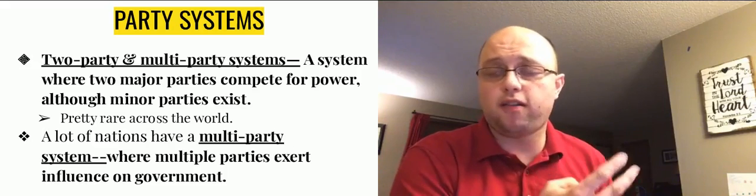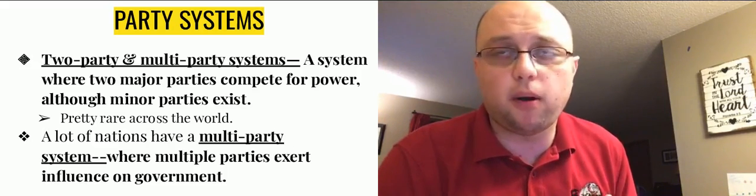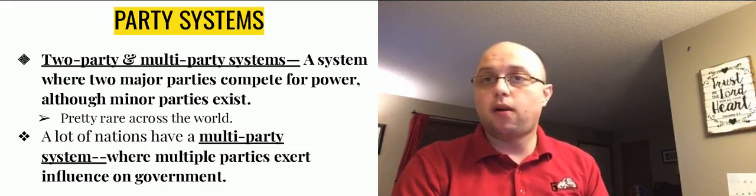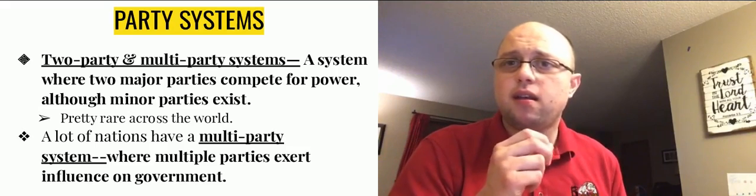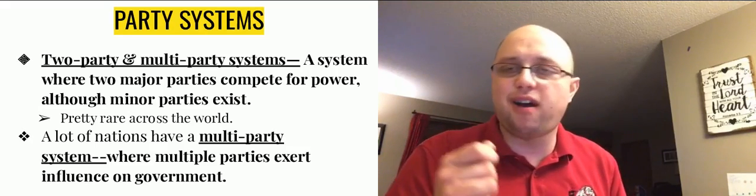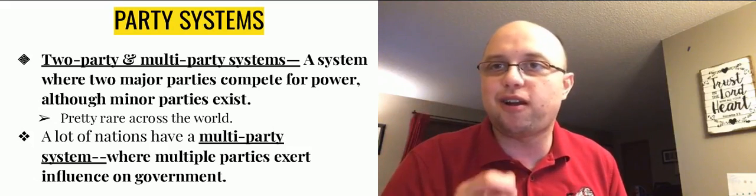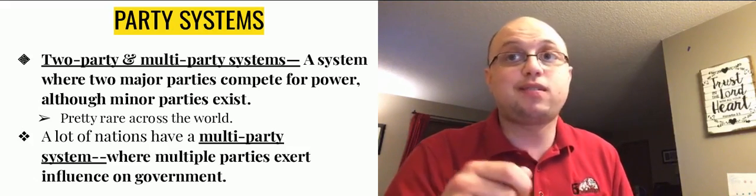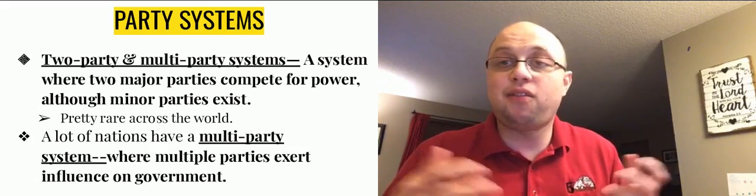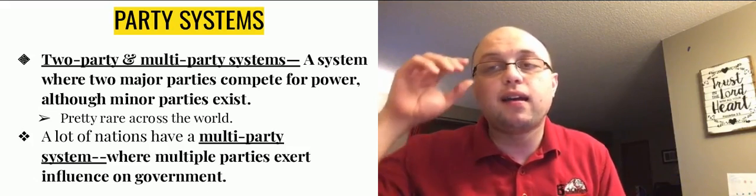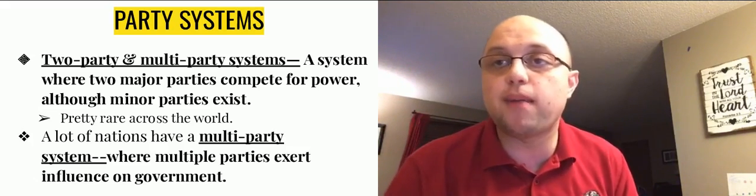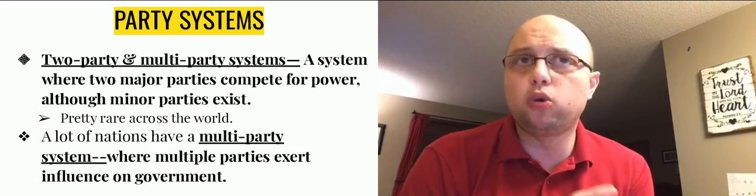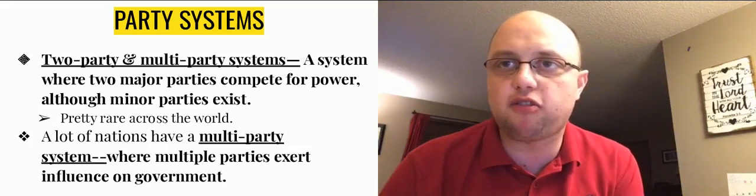Most countries have a two-party system or a multi-party system. In a two-party system, one of two major parties compete for power. The United States has that. I almost guarantee that on November 8th, 2020, the winner of the presidential election is either going to be Joe Biden, the Democrat, or Donald Trump, the Republican. There are other parties — we'll get into third parties in a minute — but realistically, a two-party system is one where only one of two major political parties has the chance to win the election.